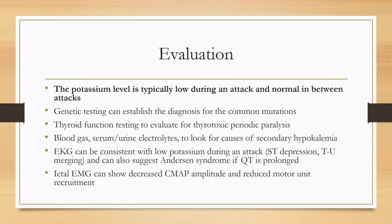Similarly, other workup for secondary hypokalemia includes a blood gas and serum and urine electrolytes. An EKG can be done, which will be consistent with low potassium — it can show ST depression or T-U merging — and it can also suggest Anderson syndrome if the QT is prolonged. The ictal EMG can show decreased CMAP amplitudes and reduced motor unit recruitment.